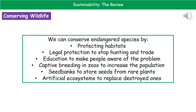We can take several steps to try to conserve these endangered species. We can protect their habitats to make sure they remain for the future. We can bring in legal protection to prevent them being hunted and traded. We can educate people to make them aware of this problem. Zoos run very important captive breeding programs to increase those populations, and some of the best zoos release those populations back into the wild. We've also got seed banks to store seeds from rare plants, and we can create artificial ecosystems to replace any that have been destroyed.